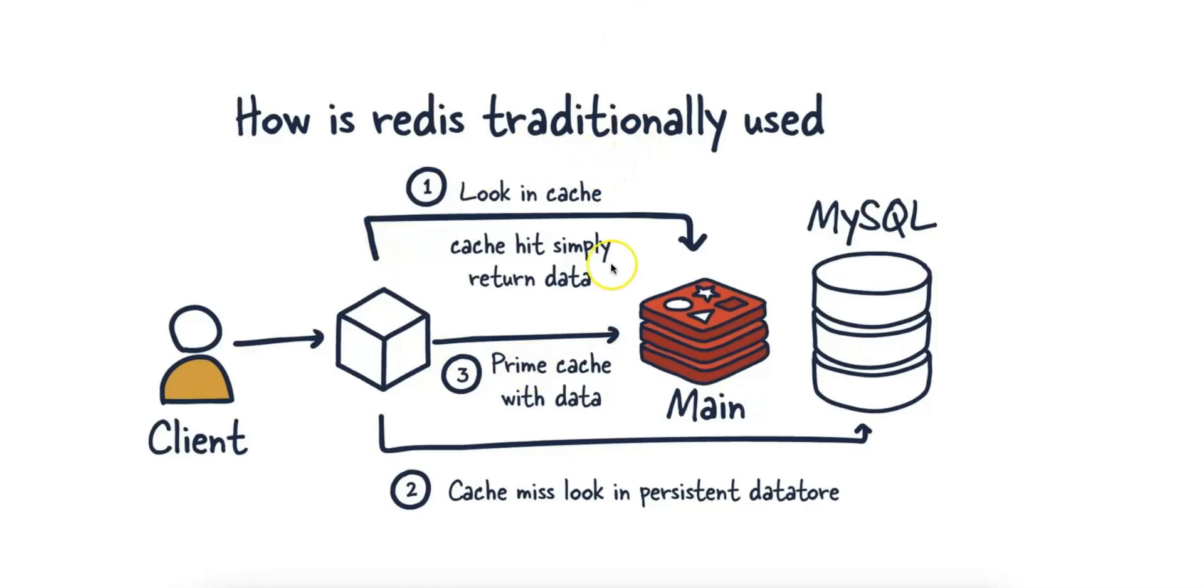What is the concept of a cache hit or a cache miss? For a cache hit, when a client requests data, the system first checks if the data is available in Redis, or the cache. If it is, this is called a cache hit, and Redis quickly returns the data without querying MySQL.